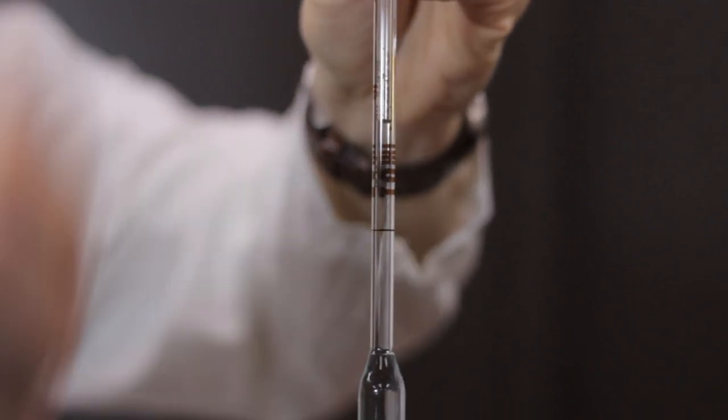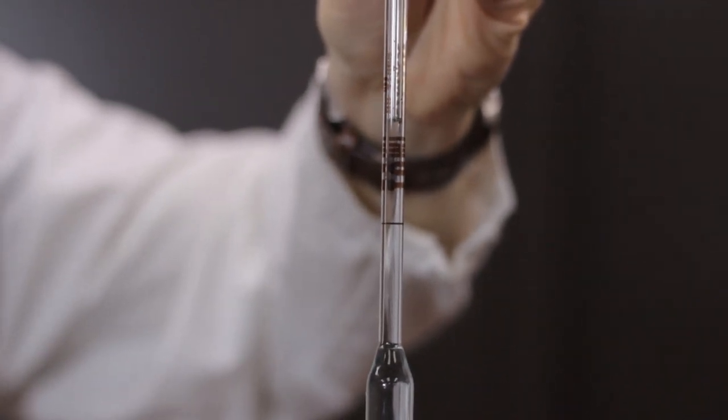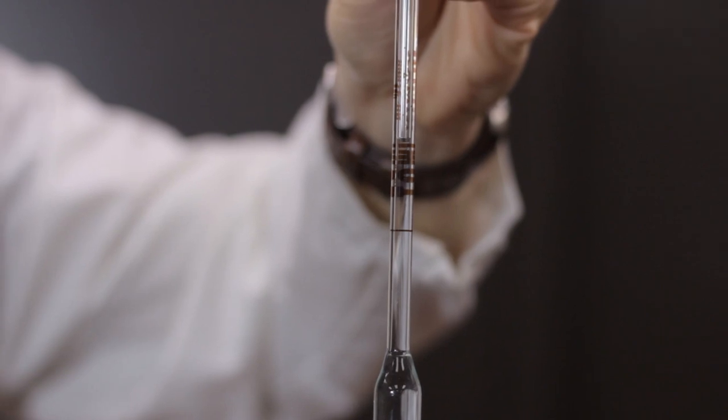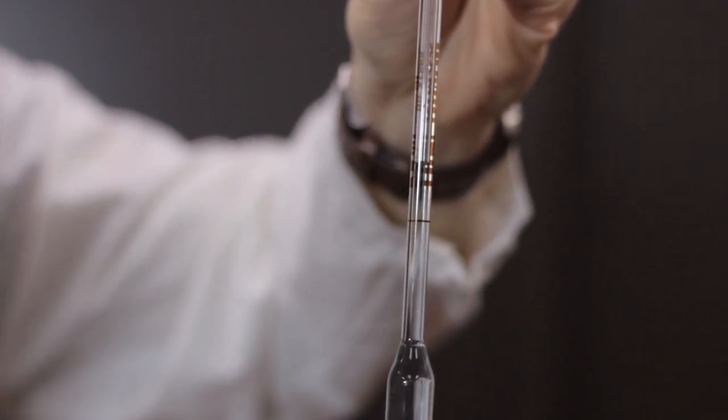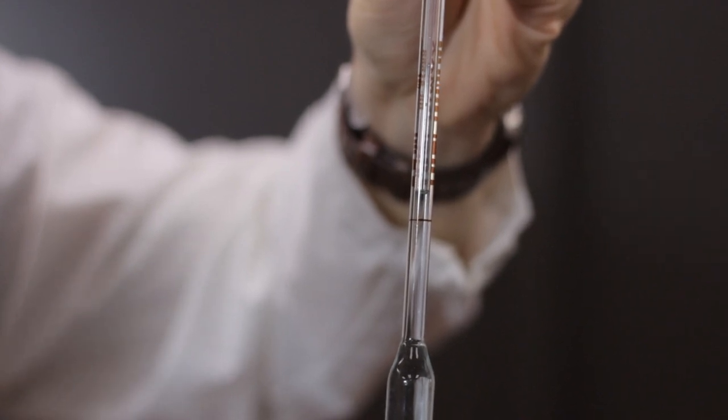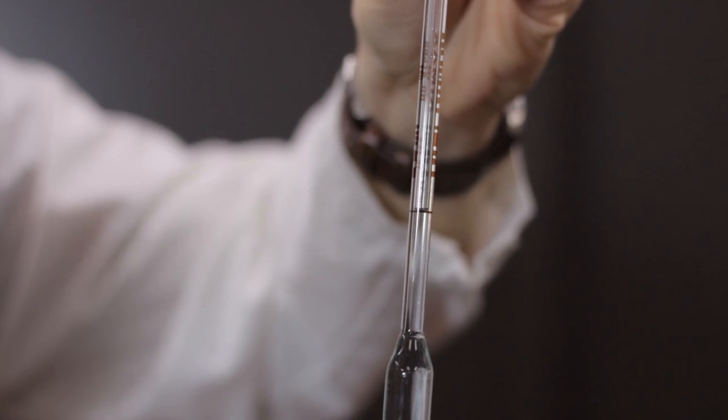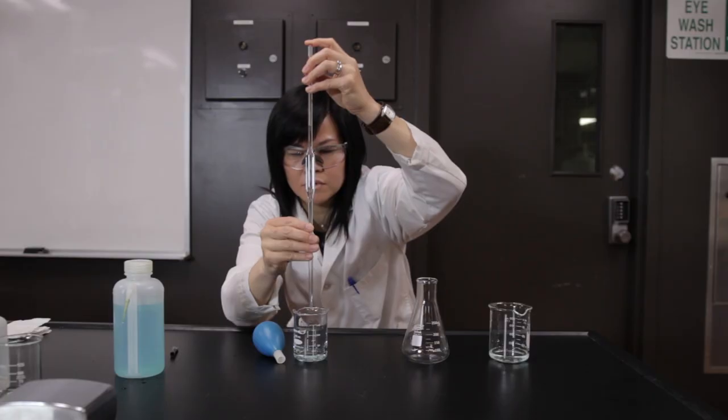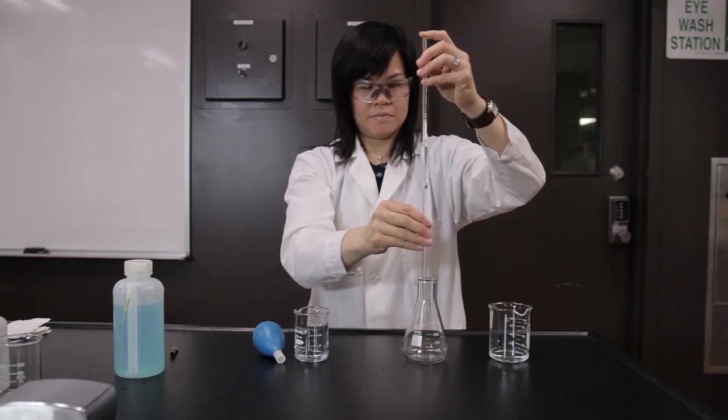Dip the pipette tip into the solution. Release the finger pressure slowly to allow the solution to drain until the bottom of the meniscus is at eye level. Touch the tip of the pipette to the beaker to remove any partially formed drops.